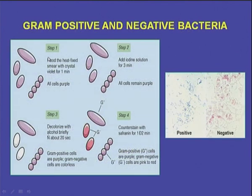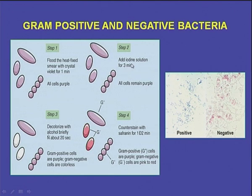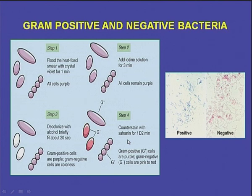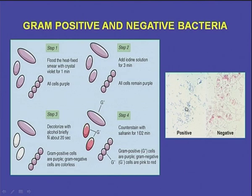Here is the gram staining procedure: first, flood the heat-fixed smear of bacteria with crystal violet for one minute — all cells become purple. Then add iodine solution for three minutes — all cells remain purple. Step three: decolorize with alcohol briefly for about 20 seconds — gram positive cells remain purple while gram negative cells become colorless. Finally, counter-stain with safranin for about one to two minutes — gram positive cells are purple whereas gram negative cells are pink to red in color. This shows how we see the slide of positive and negative bacteria under a normal compound microscope.